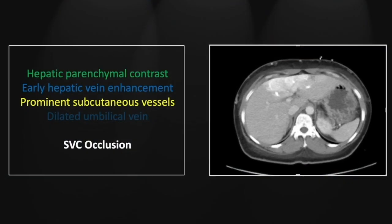Our next case is superior vena cava occlusion. This is a chronic condition but does present acutely with some frequency and is a very worthwhile finding to know. You can see this ill-defined blush of parenchymal enhancement throughout the anterior portion of the liver, early opacification of the hepatic veins — or preferential, disproportionate opacification of those veins — and clearly dilated anterior abdominal wall vessels.